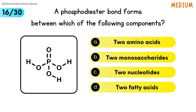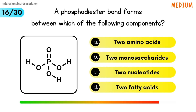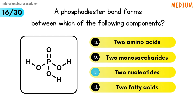A phosphodiester bond forms between which of the following components? A phosphodiester bond forms between two nucleotides.